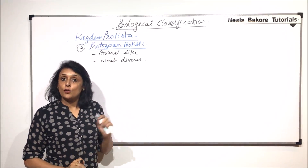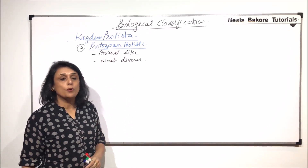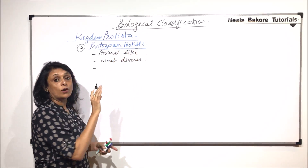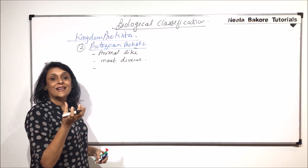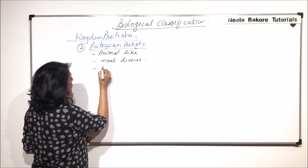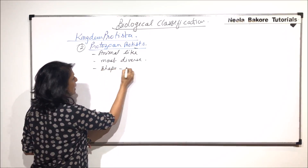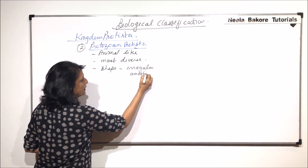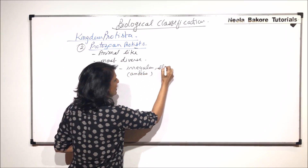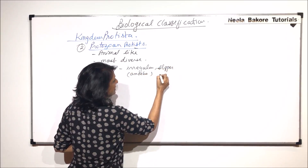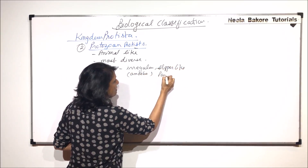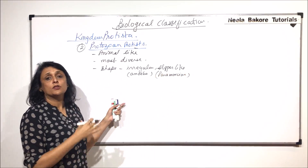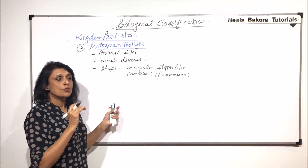In Protozoan Protists, as they are protists, all of them are unicellular. But the cell shape can be irregular — like in the case of amoeba — or it could be slipper-like, as in the case of paramecium. So there is variation in shape, and we will talk about other organisms and their shapes as well.